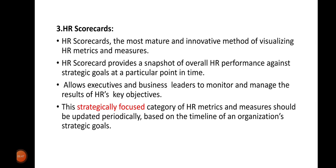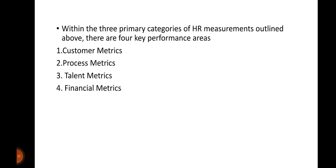The next type of metric is HR scorecards. Among all three, the HR scorecard is the most mature and innovative method of visualizing HR metrics and measures of all HR processes. This scorecard provides a snapshot of overall HR performance against the goals set by the organization, allowing business leaders and executives to monitor and manage HR processes to achieve its objectives. HR scorecards are always strategically focused, so data must be updated periodically to help achieve organizational goals. The four key performance areas are customer metric, process metric, talent metric, and financial metric. We will study HR scorecards in detail in a later class.